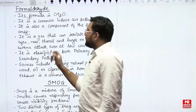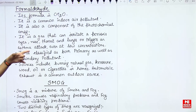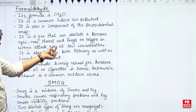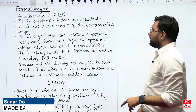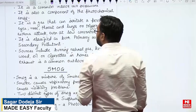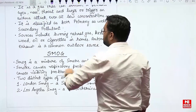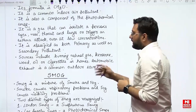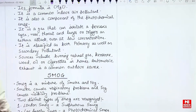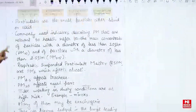Formaldehyde has the formula CH2O. It is a common indoor air pollutant and also a component of photochemical smog. It irritates the eyes, nose, throat, and lungs and can trigger asthma attacks even at low concentrations. It is classified as both a primary and secondary pollutant since it can be produced directly or indirectly. Sources include burning of natural gas, kerosene, wood, oil, or cigarettes indoors, and automobile exhaust is a common outdoor source.